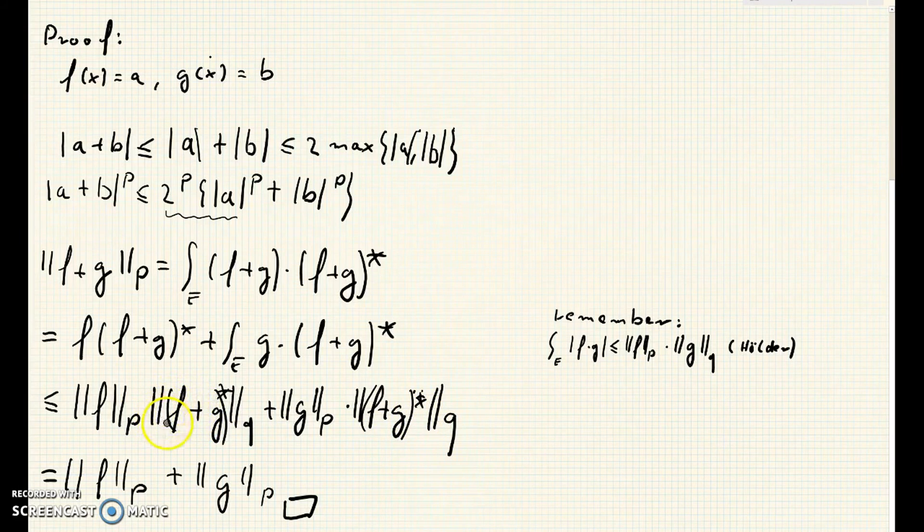Now we remember that this term and this term are one, and we can conclude that this line is equal to the p-norm of f plus the p-norm of g. And we are finished with the proof because we have now shown that the p-norm of f plus g is less than or equal to the p-norm of f plus the p-norm of g, which is the triangle inequality in our LP space.